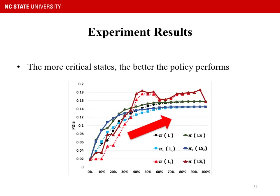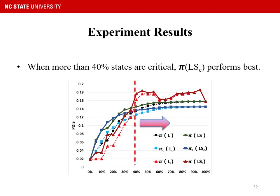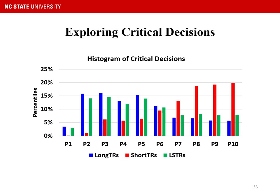The general trend still holds: the more critical states, the better the policy performs. When more than 40% of states are critical, the red-line policy performs best — it applies critical DQN to identify critical states and original DQN to make critical decisions. We also explored critical decisions in each problem by setting the threshold at 50%. It shows that long-term rewards focus on critical decisions in the early stage, while short-term rewards focus on critical decisions in the late stage. This reflects that long-term and short-term rewards complement each other.